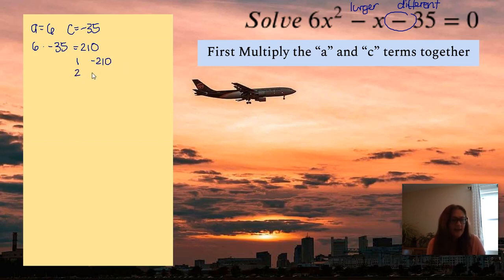So the factors are going to be 1 and negative 210, which we won't use. 2 and negative 105. Then 3 and negative 70. Can't use that.